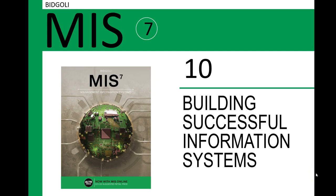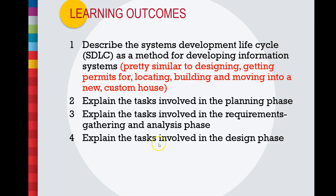This is MIS Chapter 10: Building Successful Information Systems. This chapter is about how we create a new information system. In a large organization like a college, you may have student registration, classroom scheduling, payroll — lots of different information systems. This chapter is about how you create them; it's not just writing a computer program, there's a lot involved with design.